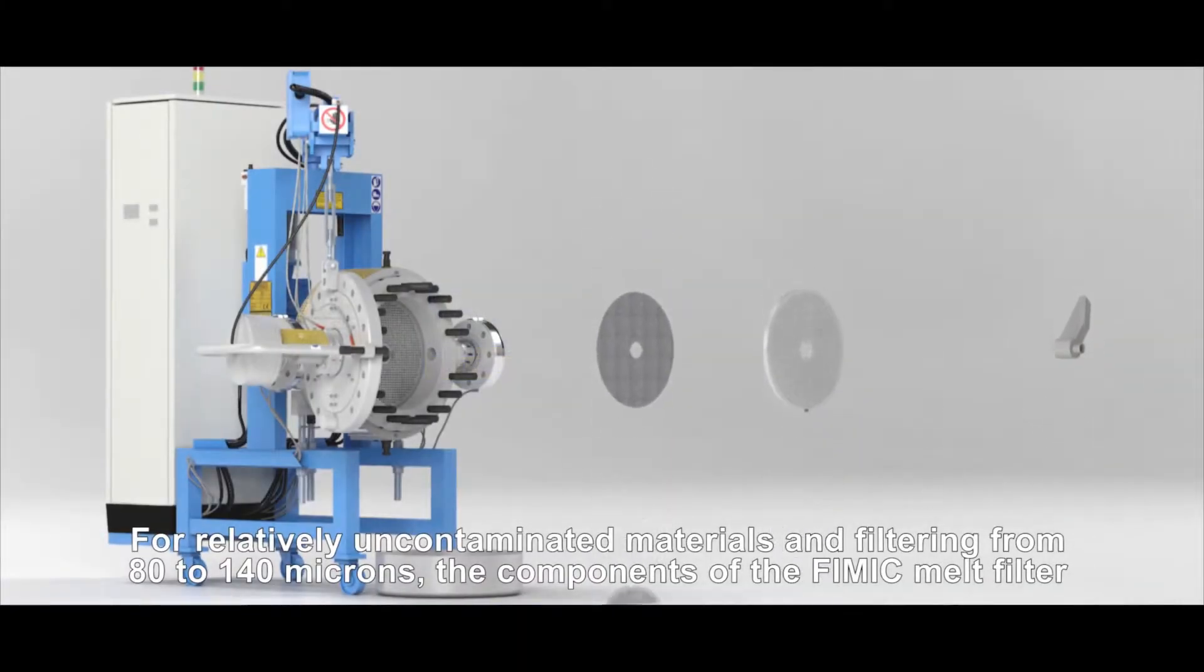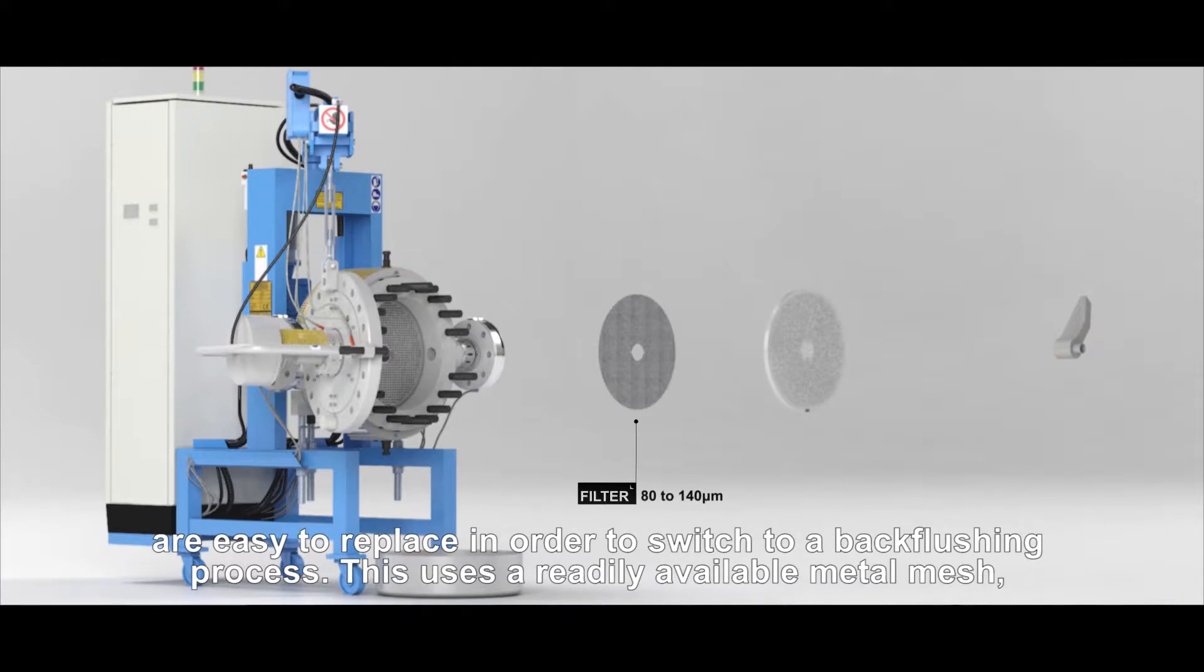For relatively uncontaminated materials and filtering from 80 to 140 microns, the components of the FIMIC melt filter are easy to replace in order to switch to a back-flushing process.